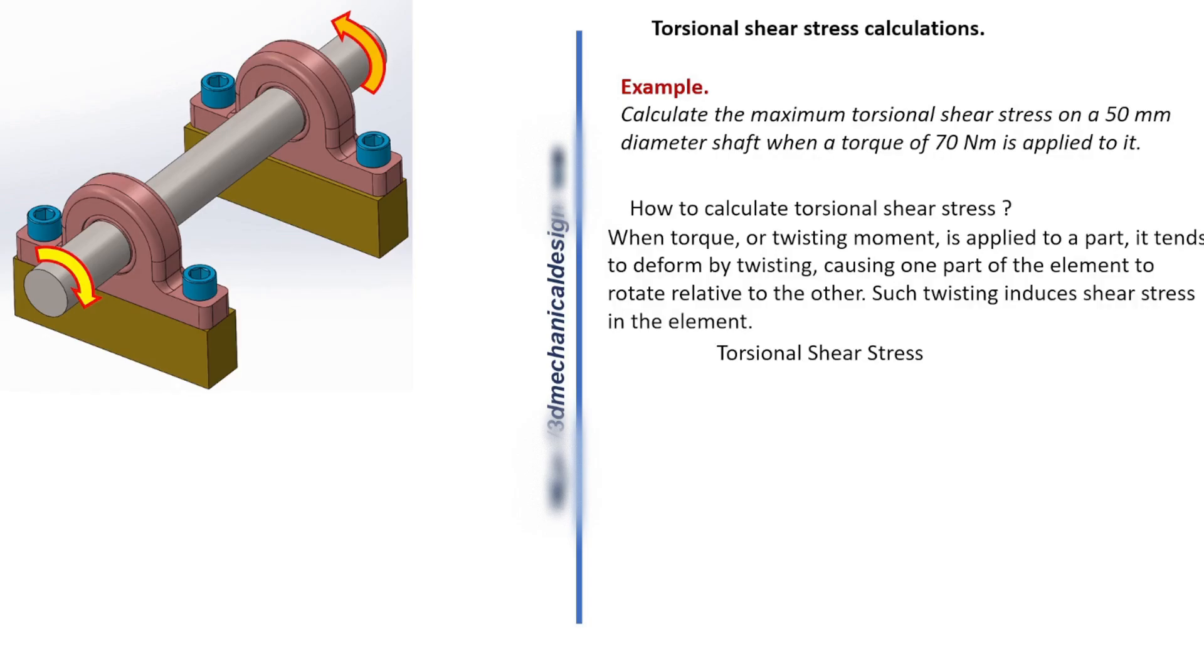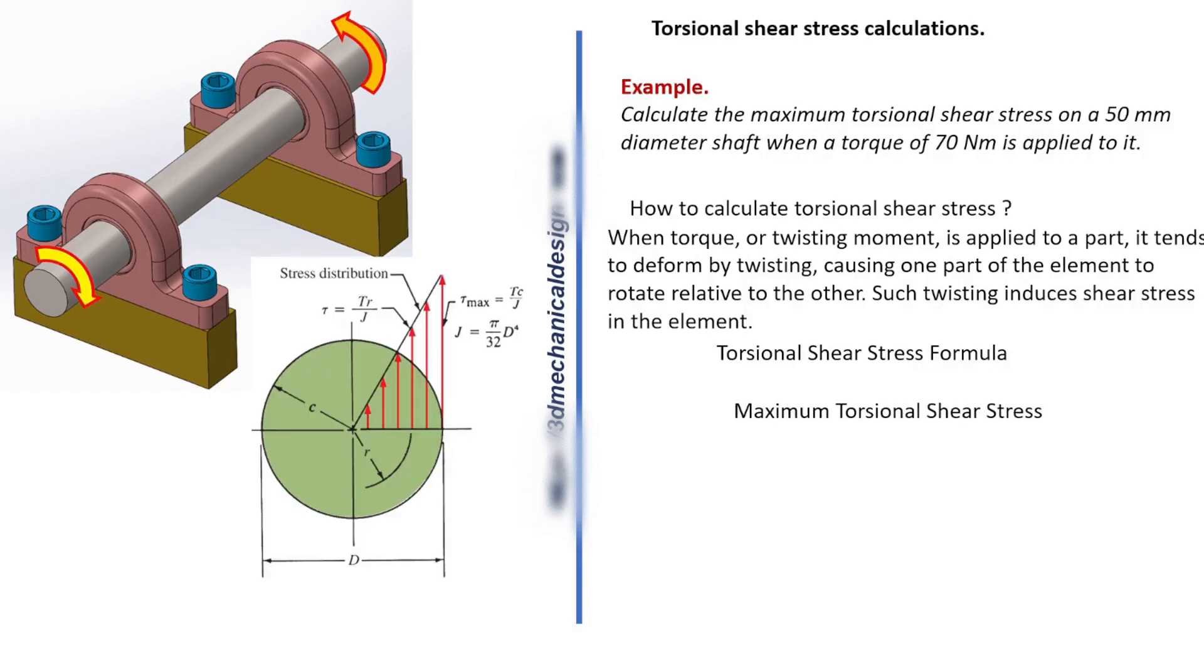Torsional Shear Stress Formula. Maximum torsional shear stress, τ max, equals T times C divided by J. Where C is radius of the shaft and J is polar moment of inertia.